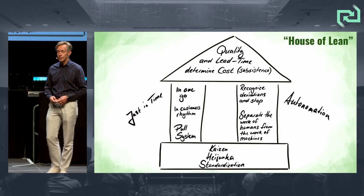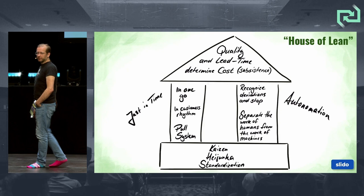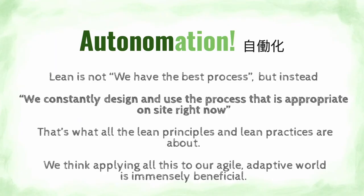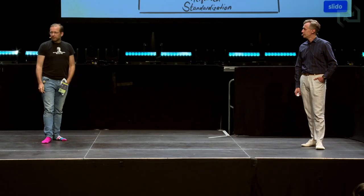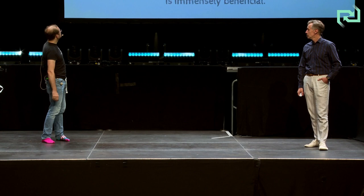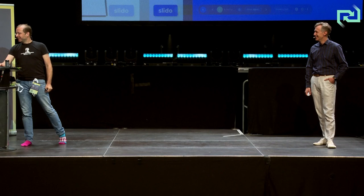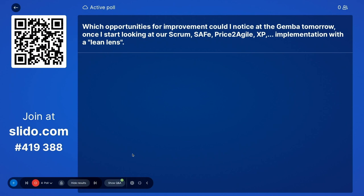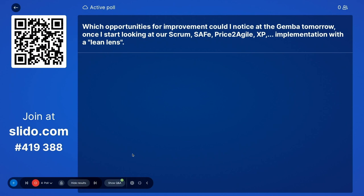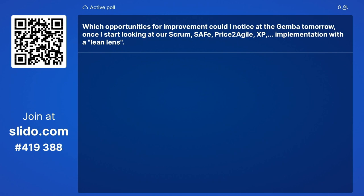This concludes our run through the House of Lean terms. We think the automation part is too neglected, and thinking about waste is often done in the wrong way — it's more about how do I not waste my valuable lifetime when I do stuff, so I feel it was worth doing. Now, which opportunities for improvement could you notice at the Gemba tomorrow, looking at your Scrum, SAFe, XP, Agile, whatever implementation through a Lean lens?